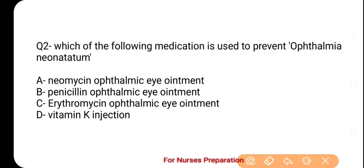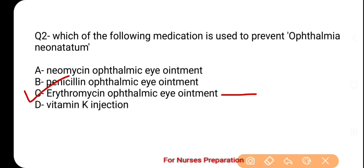The correct option is C, which is Erythromycin Ophthalmic Eye Ointment. Ophthalmic Erythromycin 0.5% ointment एक broad spectrum antibiotic होती है जो Neisseria gonorrhoeae और Chlamydia trachomatis के लिए प्रभावी होती है। इस कारण इसको Ophthalmia Neonatorum को बचाने के लिए उपयोग में किया जाता है। Vitamin K का उपयोग मुख्यतः Newborn में Abnormal Bleeding को रोकने के लिए किया जाता है।